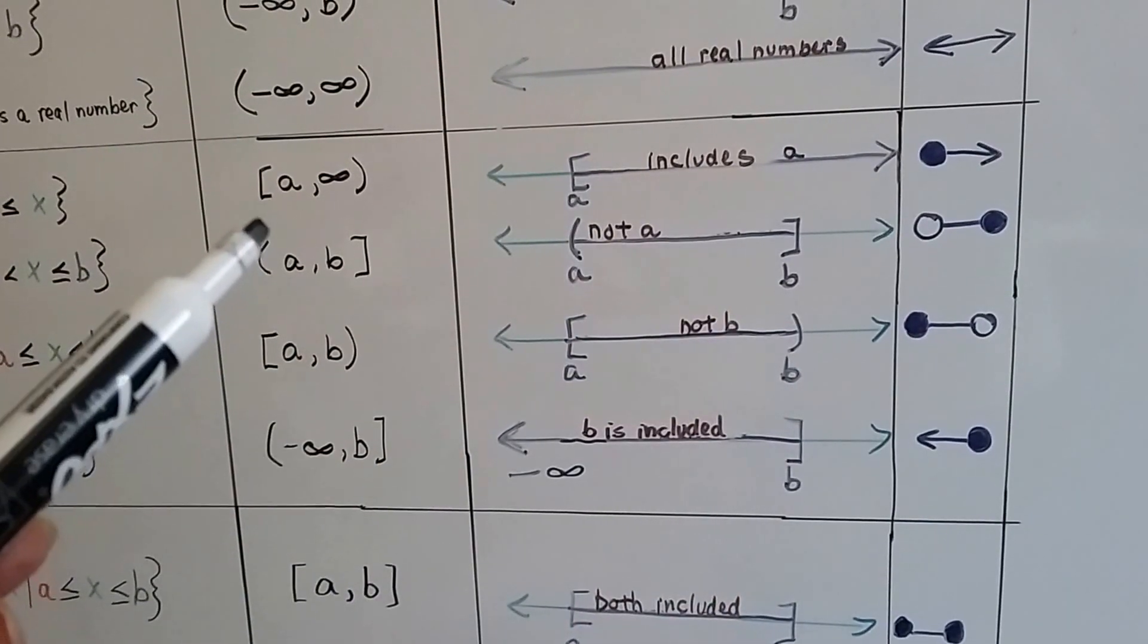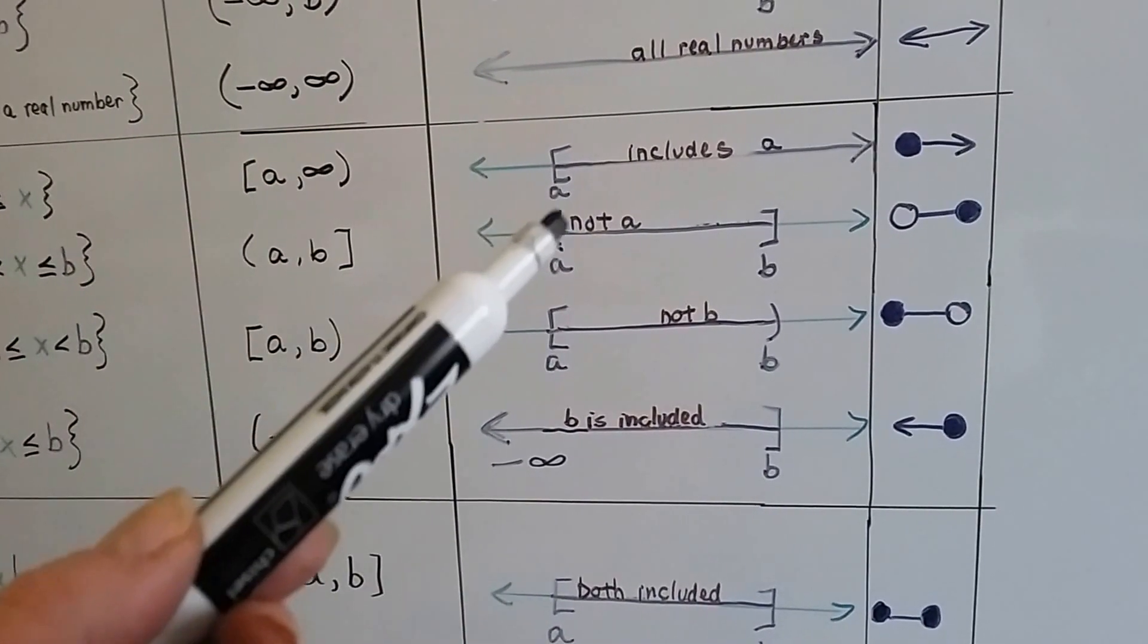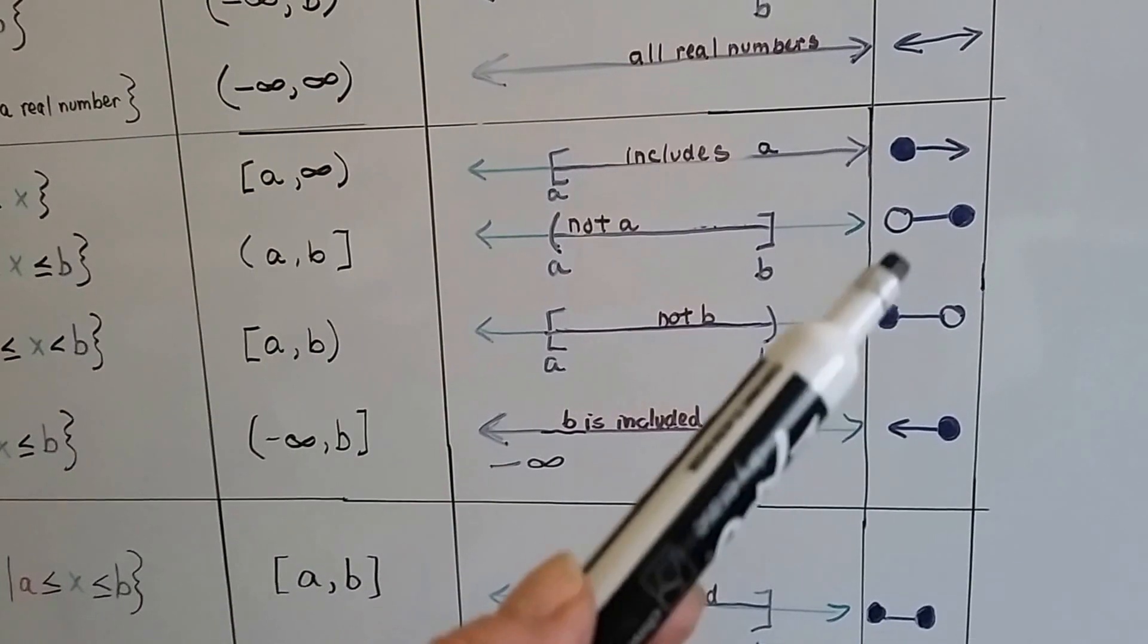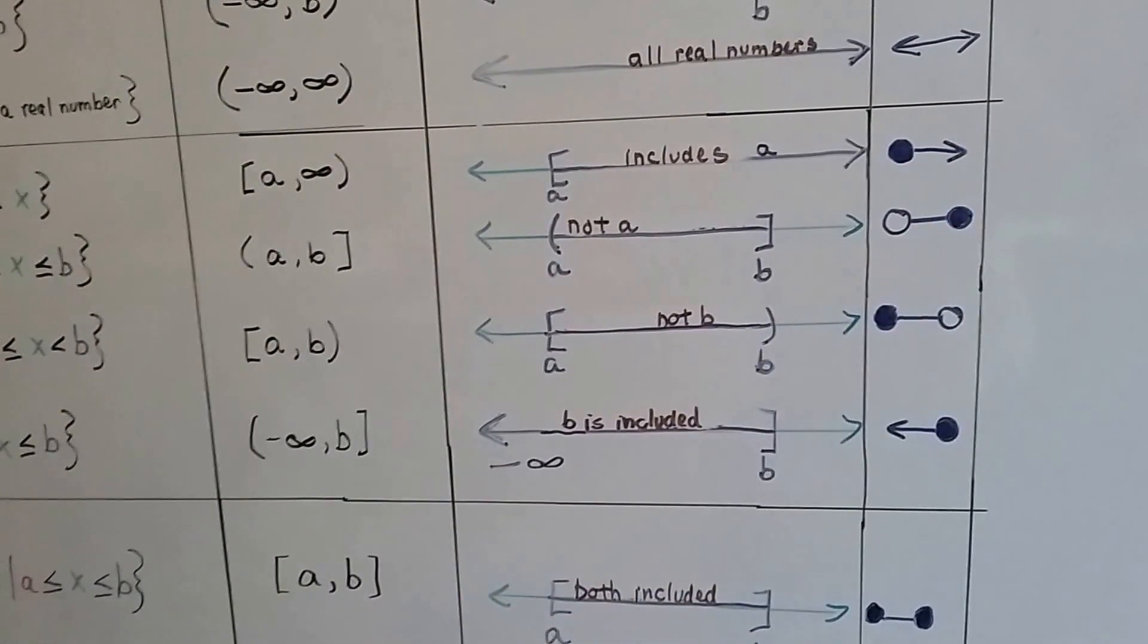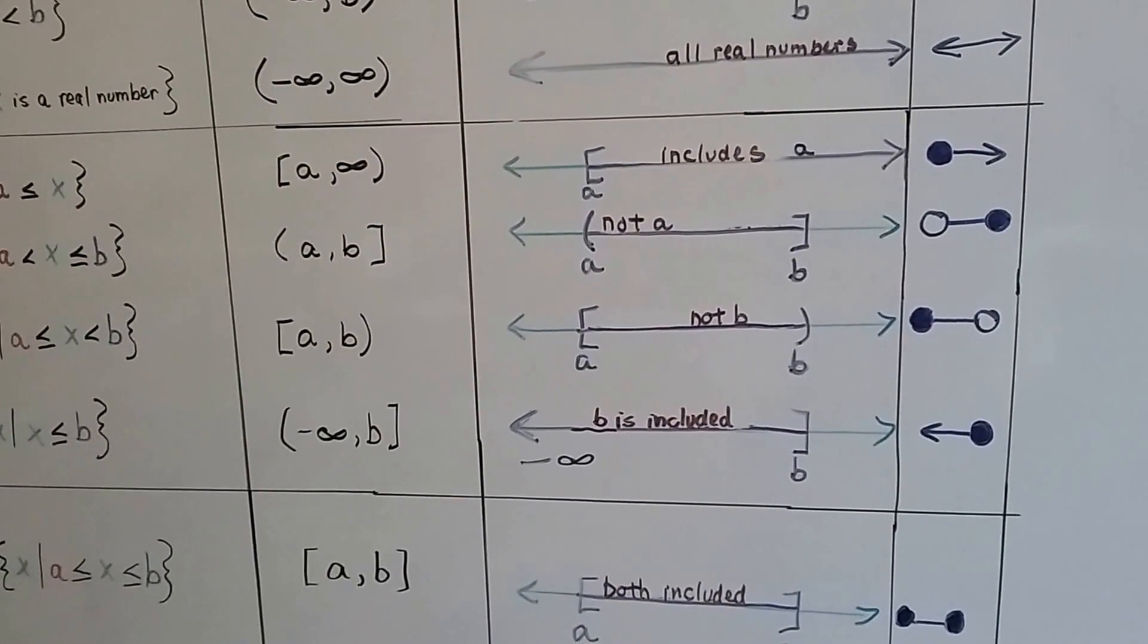Here for a and b, this is a parentheses, and that's a bracket, and that's how it's graphed. Just a parentheses and a bracket to show it's closed, and doesn't include it, or it includes it.